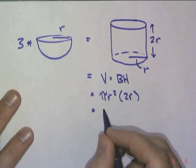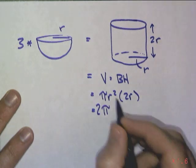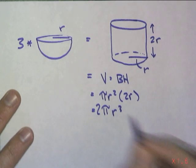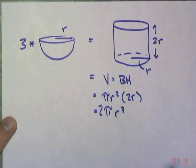So that means this is pi times two r cubed. Right? And... But that is three hemispheres.